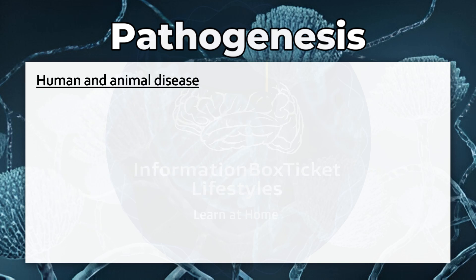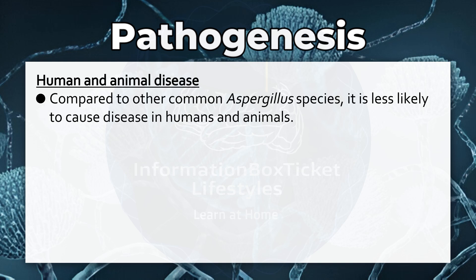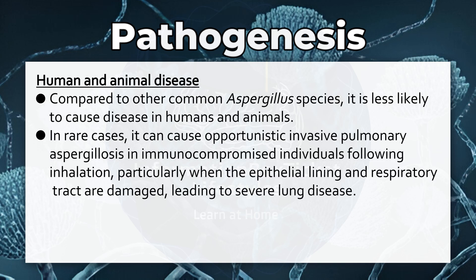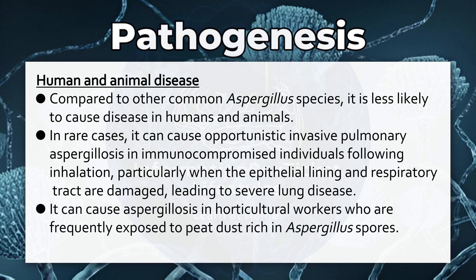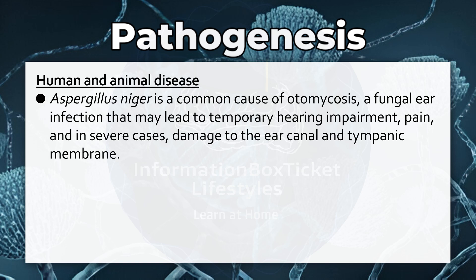Human and Animal Disease. Compared to other common Aspergillus species, Aspergillus niger is less likely to cause disease in humans and animals. In rare cases, it can cause opportunistic invasive pulmonary aspergillosis in immunocompromised individuals following inhalation, particularly when the epithelial lining and respiratory tract are damaged, leading to severe lung disease. It can also cause aspergillosis in horticultural workers frequently exposed to peat dust rich in Aspergillus spores. Additionally, it is a common cause of otomycosis — a fungal ear infection that may lead to temporary hearing impairment, pain, and in severe cases, damage to the ear canal and tympanic membrane.